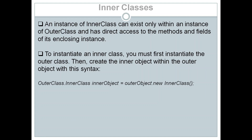An instance of an inner class can only exist within an instance of the outer class and has direct access to methods and fields of the enclosing instance. To create an object of the inner class, you must first instantiate the outer class, and then create the inner object within that outer object.